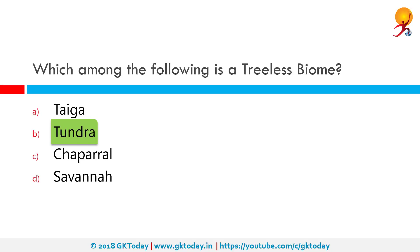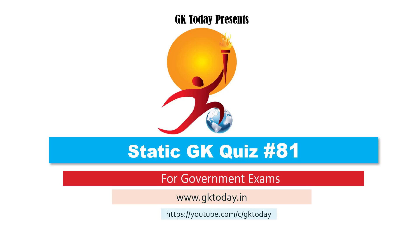Which among the following is a treeless biome? The correct answer is tundra. Tundra is characterized by treeless, low vegetation less than one meter in height, with short perennials and frozen water. Typical plants include sedges, lichens, mosses, grasses, and dwarf woody plants. Typical animals include snowy owls, musk ox, reindeer, polar bears, and migrant birds. That's all for today's quiz — until the next video, goodbye!